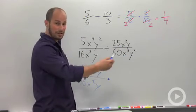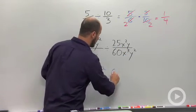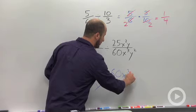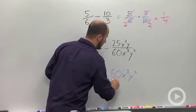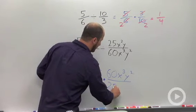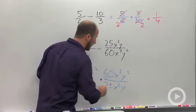and then our divisor, our second term, flips over. So this ends up being 60x cubed y squared divided by 25x squared y.